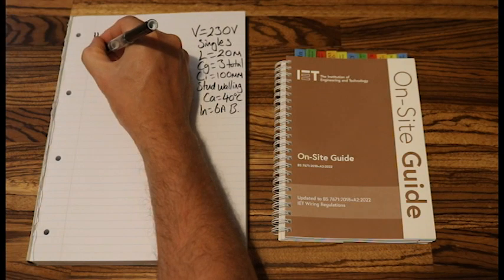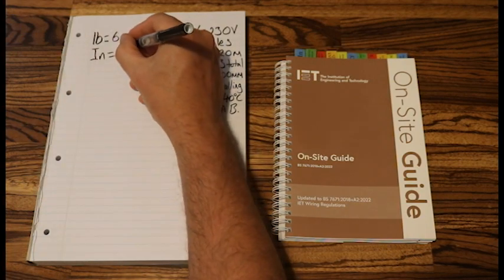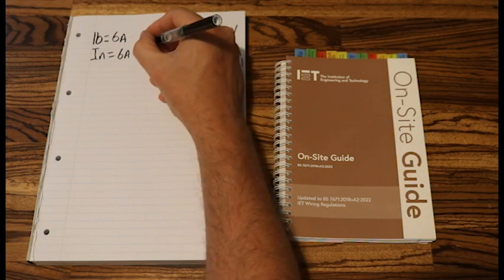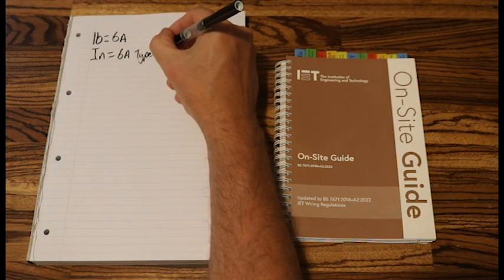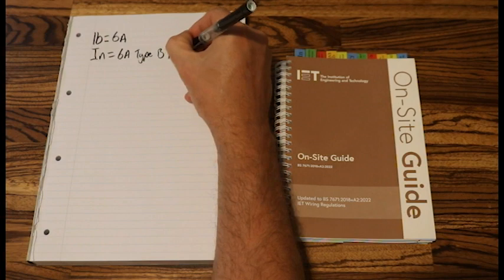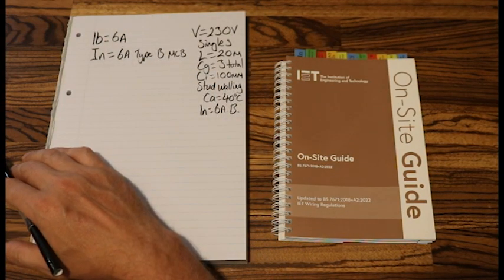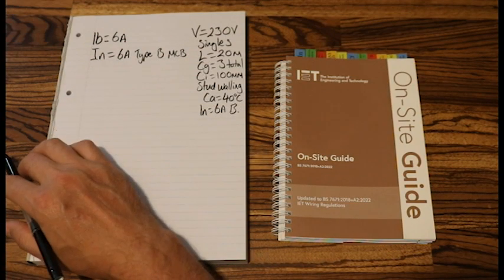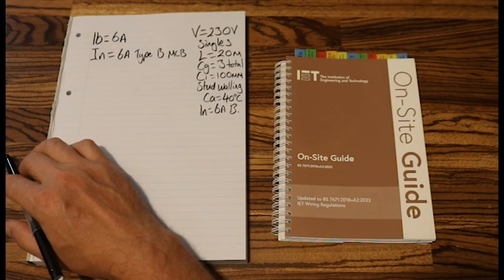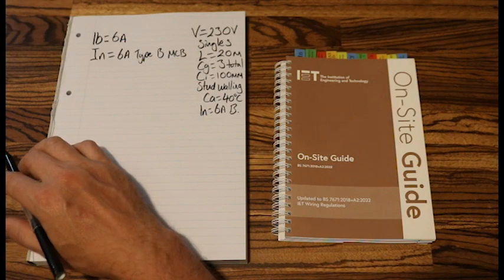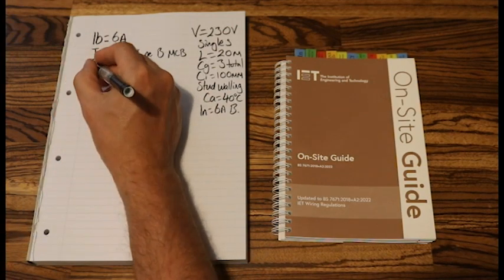IN is next. And the question told us it was a 6 amp type B MCB. Now we don't need to do any referencing here, because we've got this information from the question. Now what are we going to do? So we're going to look at our C factors. In order to find our IZ, we need to look at all of our C factors. And there's quite a few in this question.